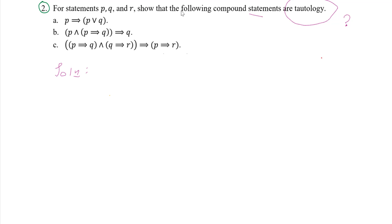But first, let's recall the definition of tautology. A compound proposition — for example, one composed of P and Q — with logical connectives, is a tautology if it is always true.